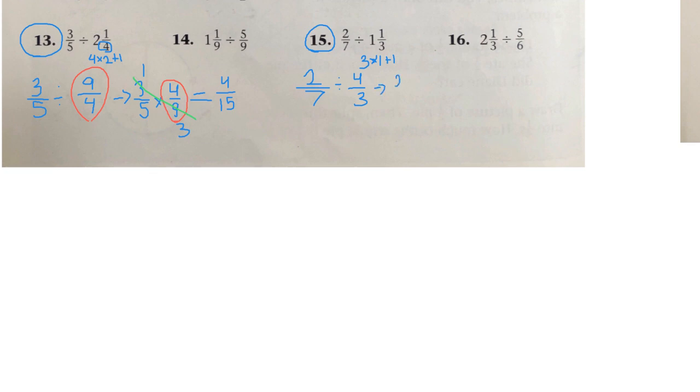Next step. The first fraction stays the same. Division sign becomes multiplication. 4 over 3 invert to 3 over 4.